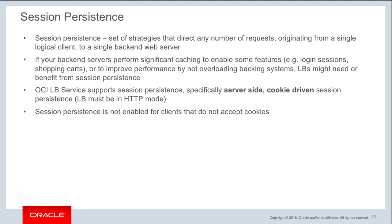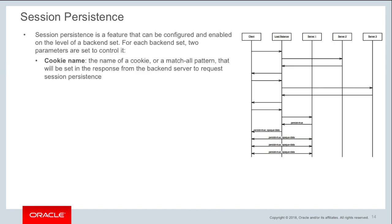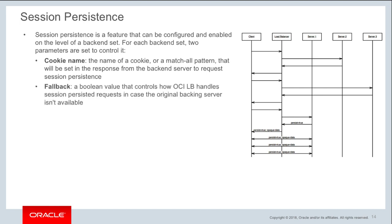If clients are not enabled to accept cookies, session persistence is not enabled in that case. Session persistence is a feature configured and enabled at the level of the backend set. When you create a backend set it gives you options for two parameters: whether you are enabling session persistence, what the cookie name is, and the fallback setting. Within the cookie name you define the name of your cookie, or you can use a match-all pattern, in which case any cookie set by the backend server will activate session persistence.